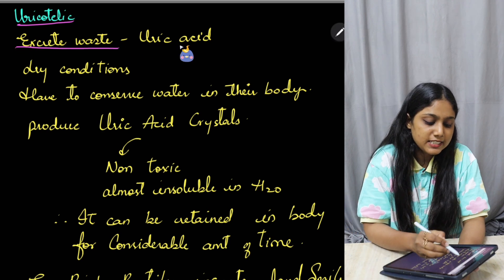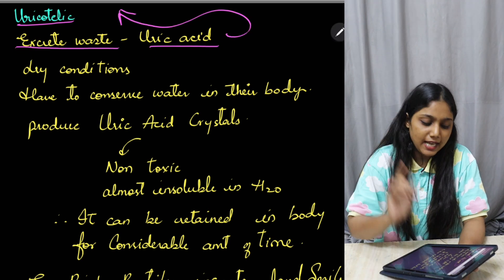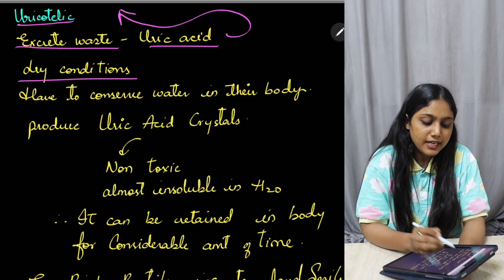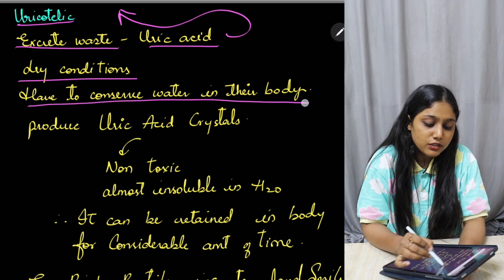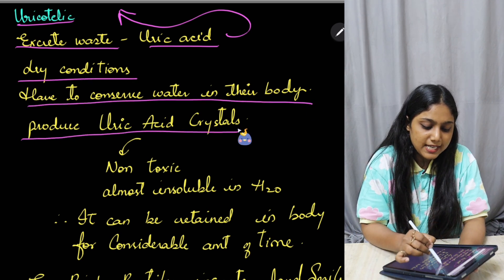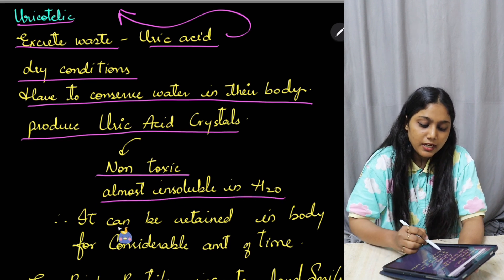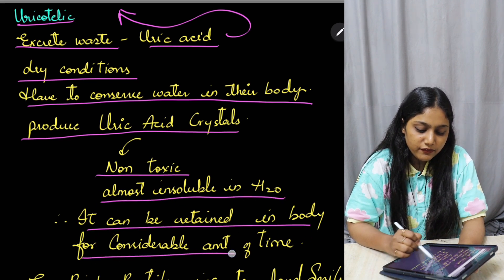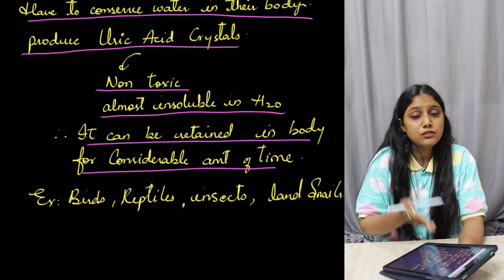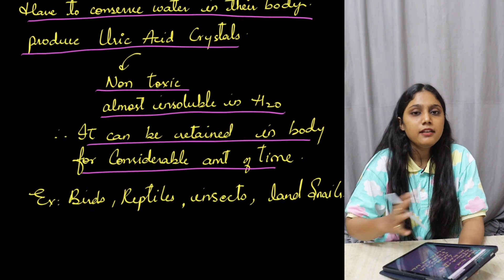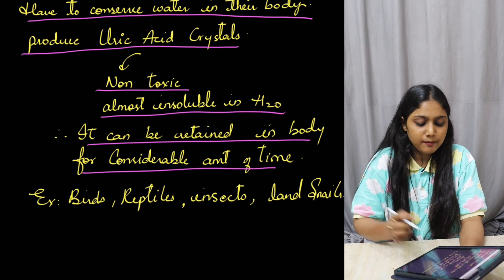Uric acid is excreted in the form of uric acid crystals with minimal loss of water. Such animals are called uricotelic animals. In dry conditions, these animals have to conserve water, and they produce uric acid crystals which are non-toxic and almost insoluble in water. Therefore, uric acid can be retained in the body for a considerable amount of time before being eliminated.